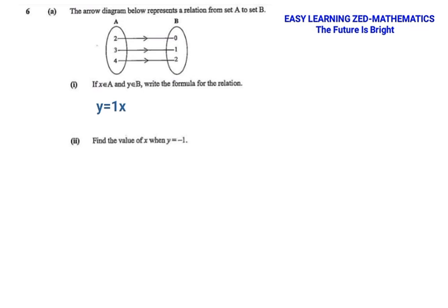Now let's look at the elements in set A in yellow. The question we ask ourselves is: what can we do to 2 to get the answer which is 0? Two minus 2 gives us 0, so we subtract 2. What can we do to 3 to get 1? We subtract 2 from 3 to get 1. What can we do to 4 to get 2? We subtract 2 from 4 to get 2. In all these cases we are subtracting 2, so we put minus 2 there.